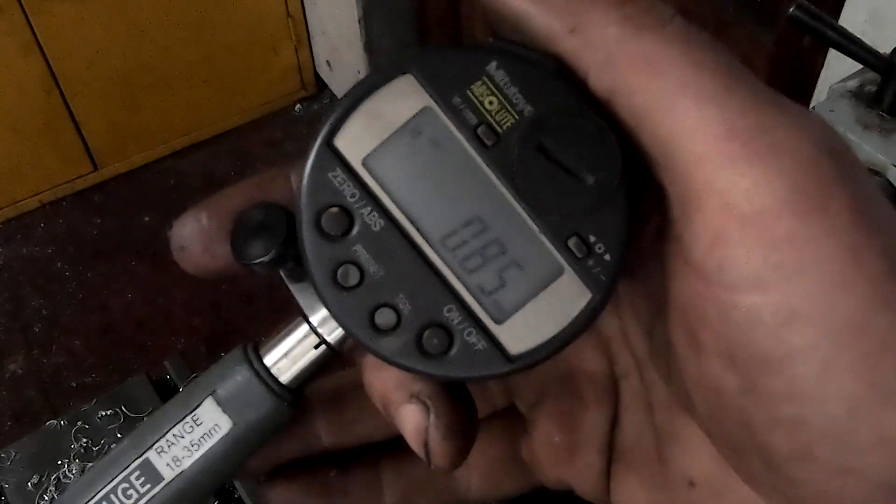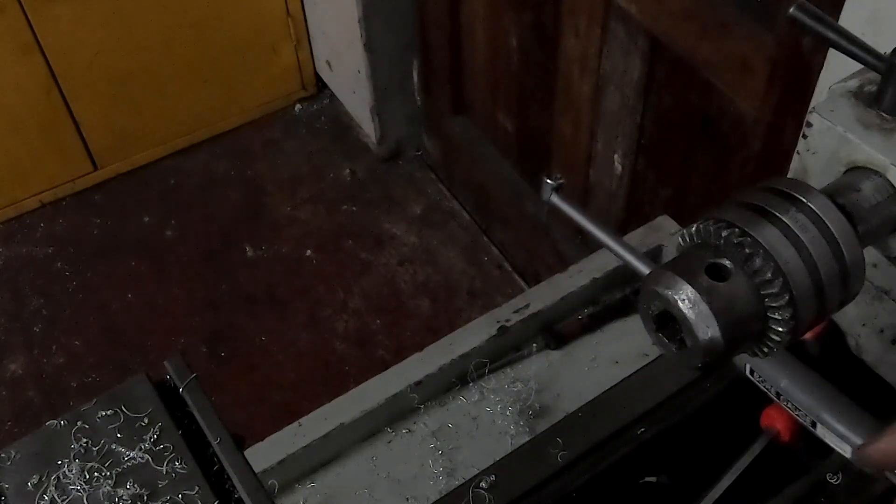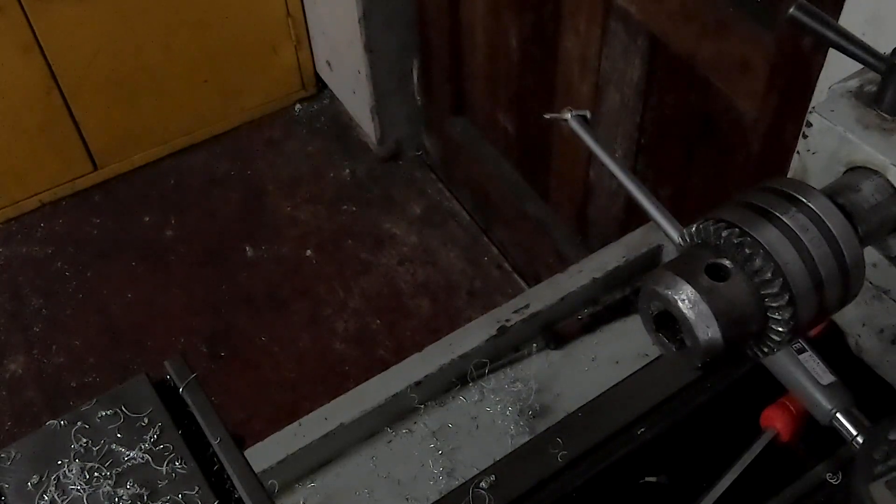Bearing in mind we're turning this on a lathe, that means that we are going to be reducing the diameter by half that, or we need to increase the diameter by half that number on our dial indicator gauge. I'll show you that down here now.